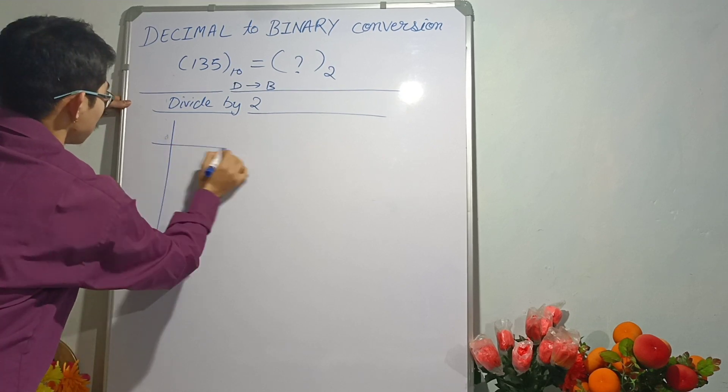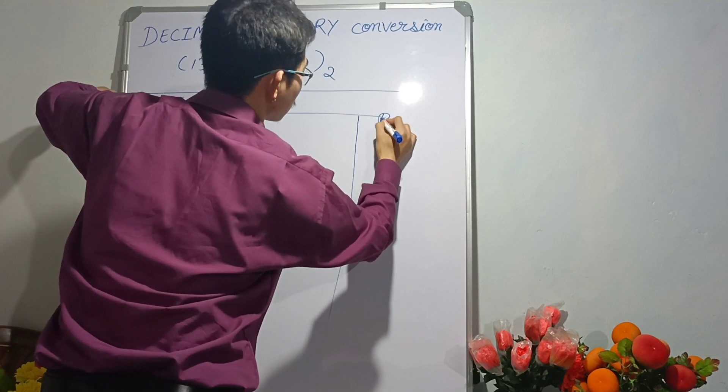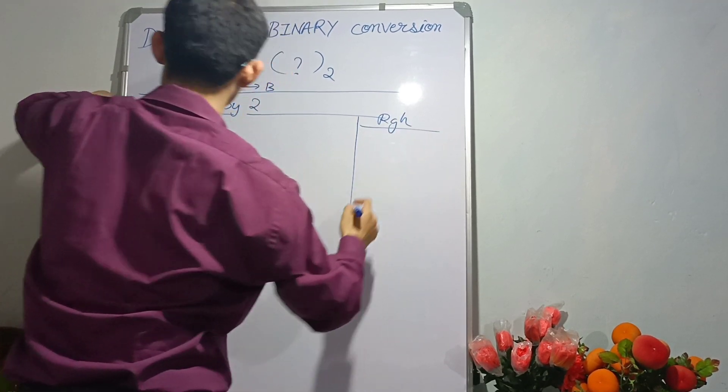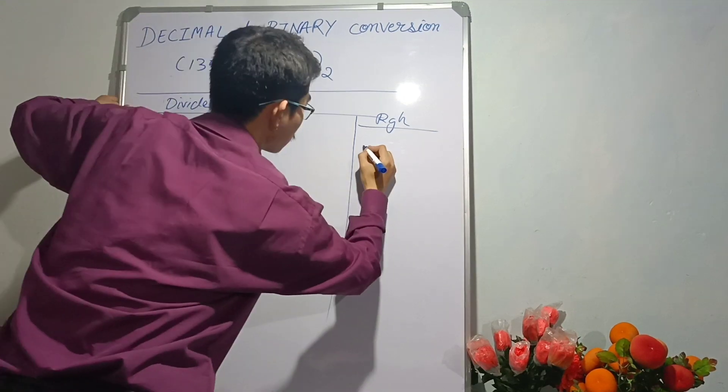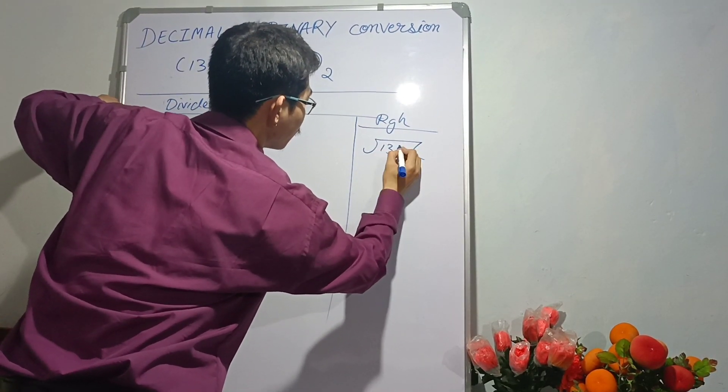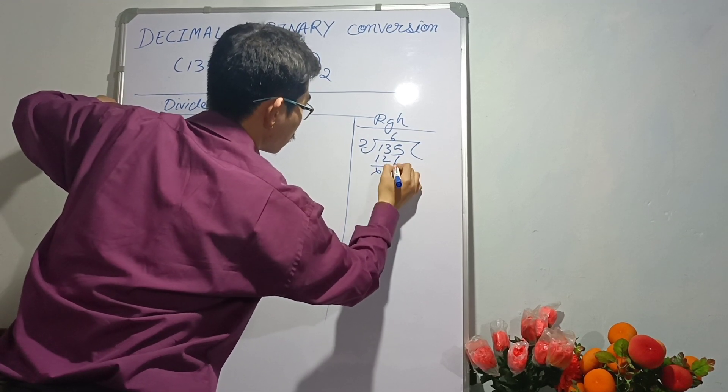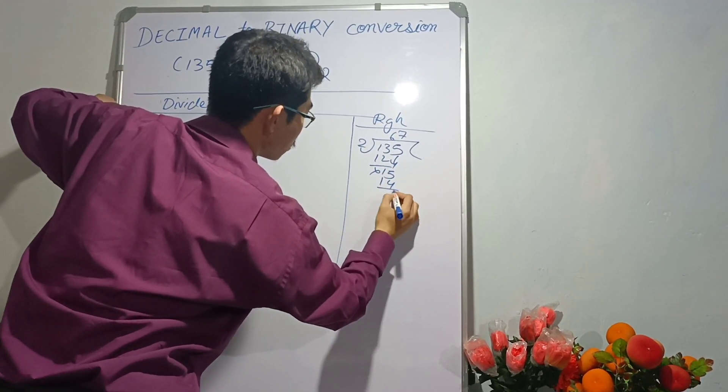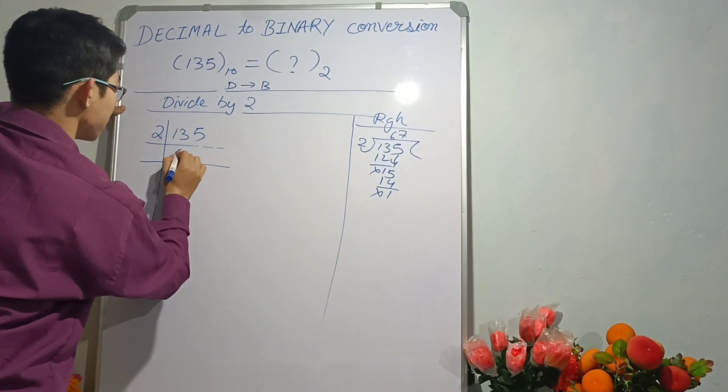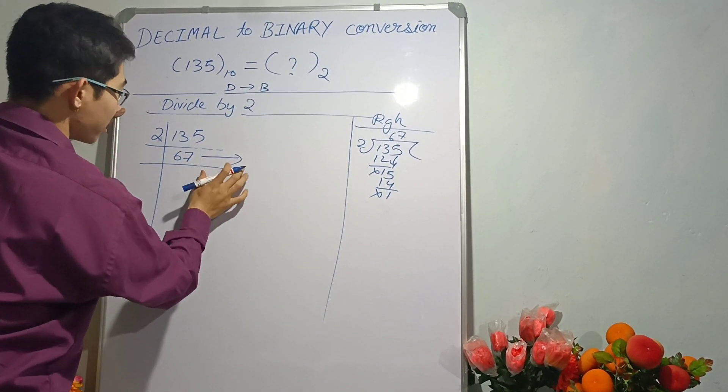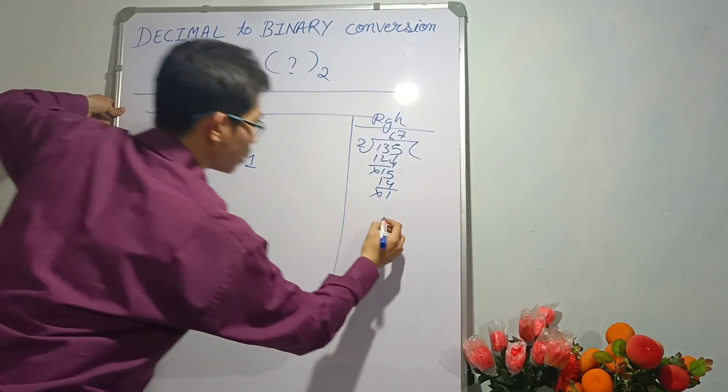Now we're gonna write this number this way. Let us do some rough work here. 135 divided by 2: 2 times 6 is 12, 2 times 7 is 14, remainder is 1. So 67, we'll get 1 as a remainder.